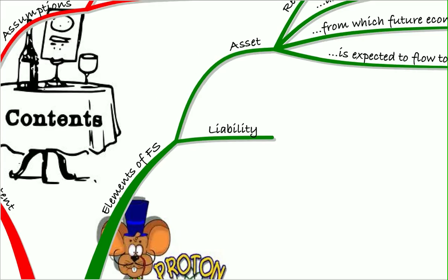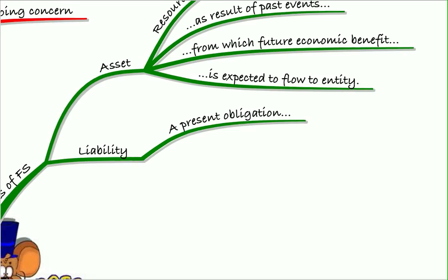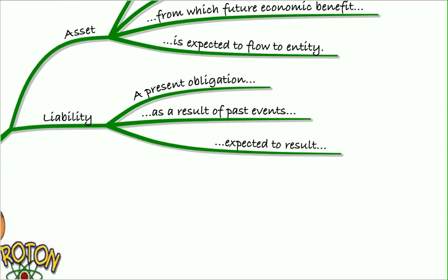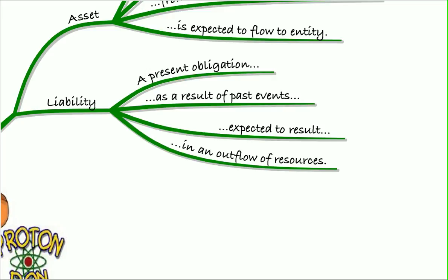A liability definition is given as a present obligation as a result of a past event expected to result in an outflow of resources. Again, that's a key definition because all of the different standards within IFRS will use that definition for a liability.